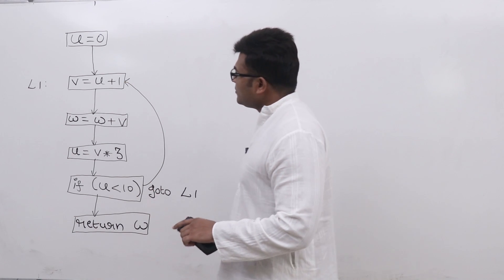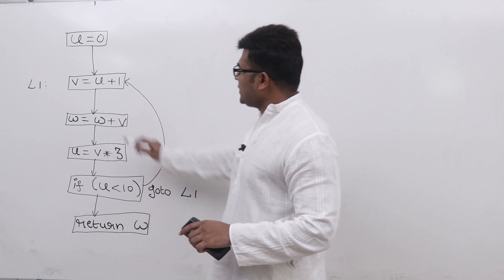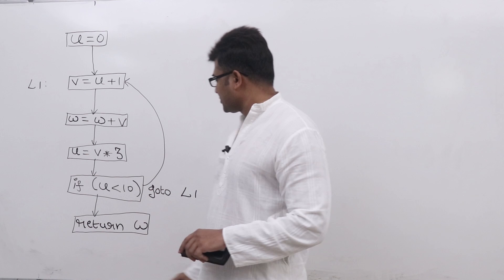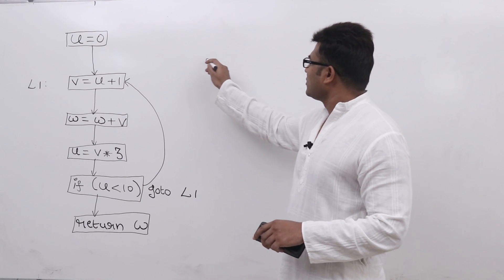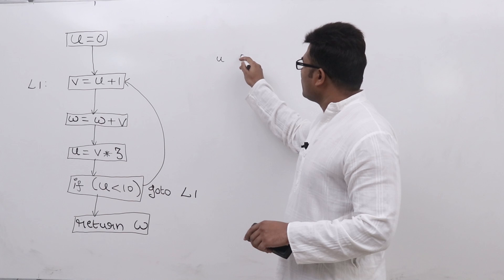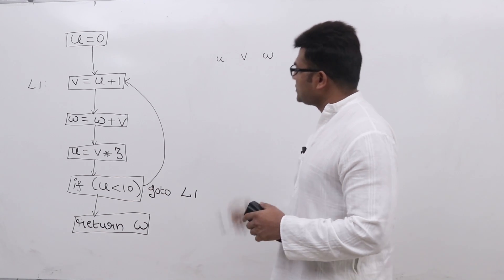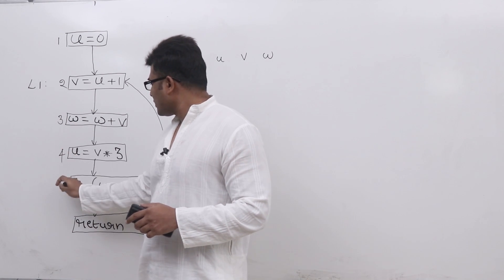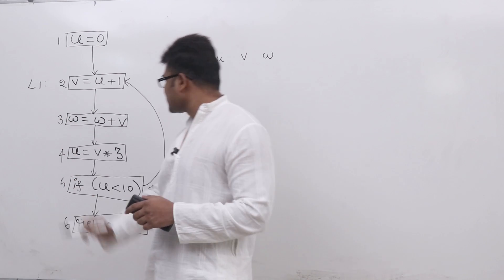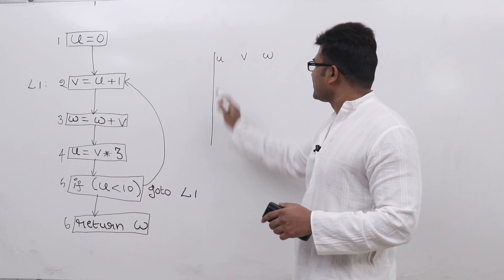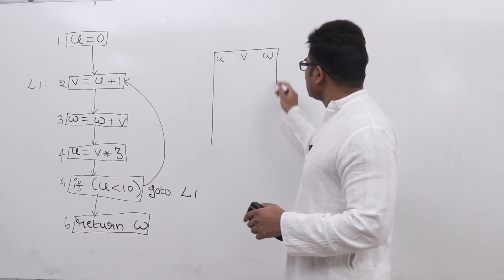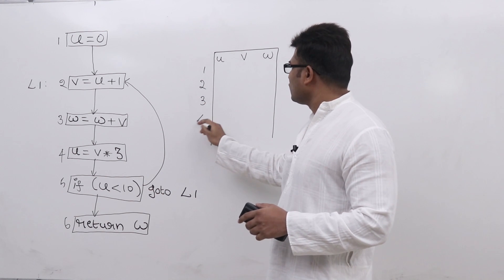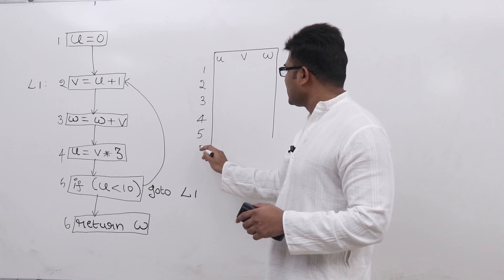Now, what are the variables that we have in this particular program? We have u, v, and w — only three variables. And how many statements are there? One, two, three, four, five, six — so there are 6 statements total.